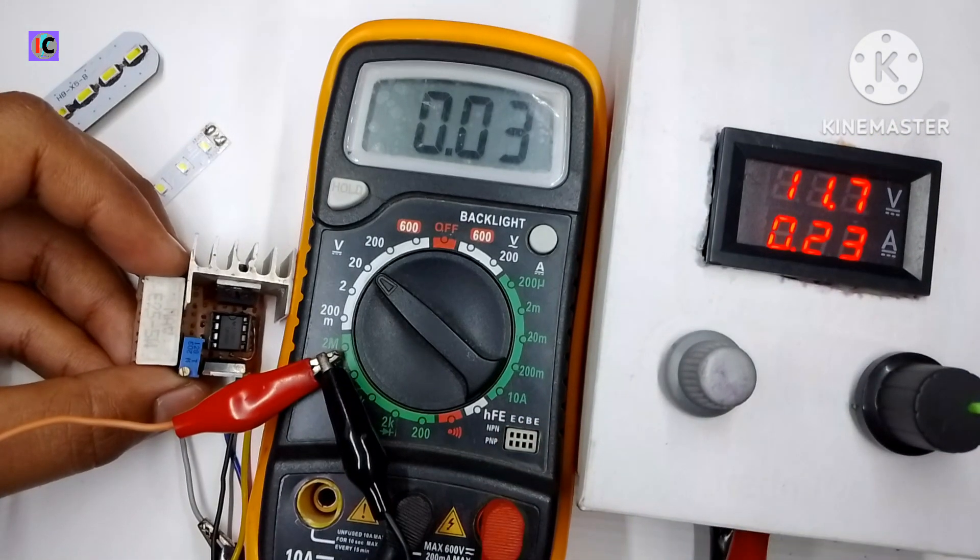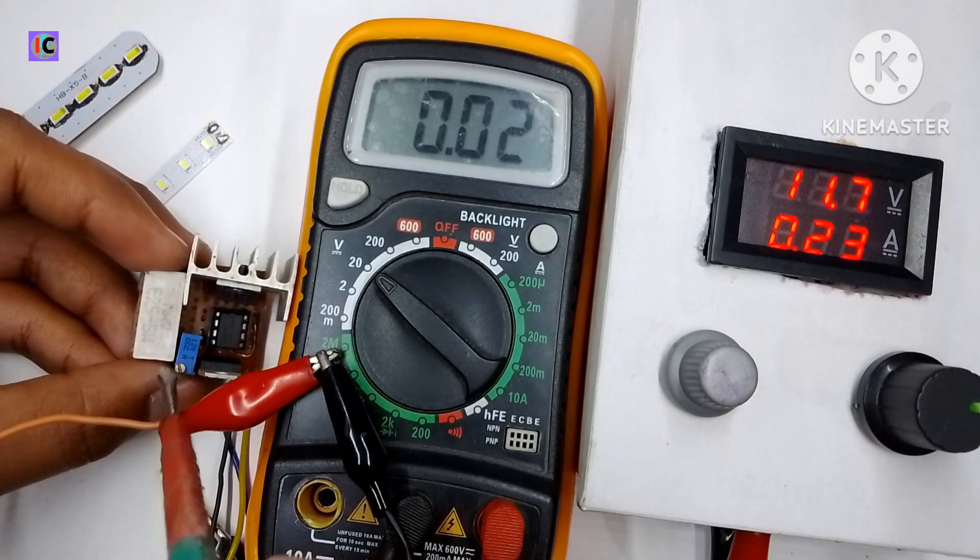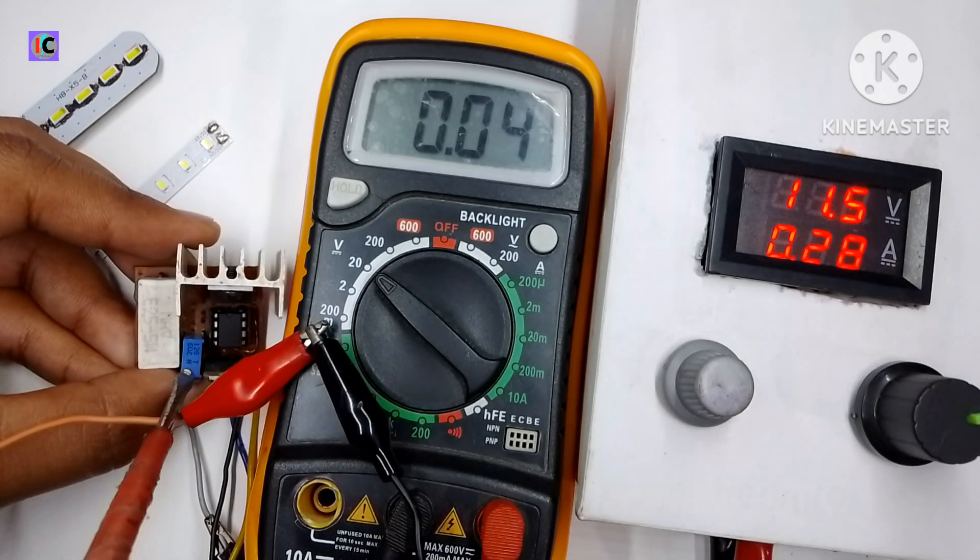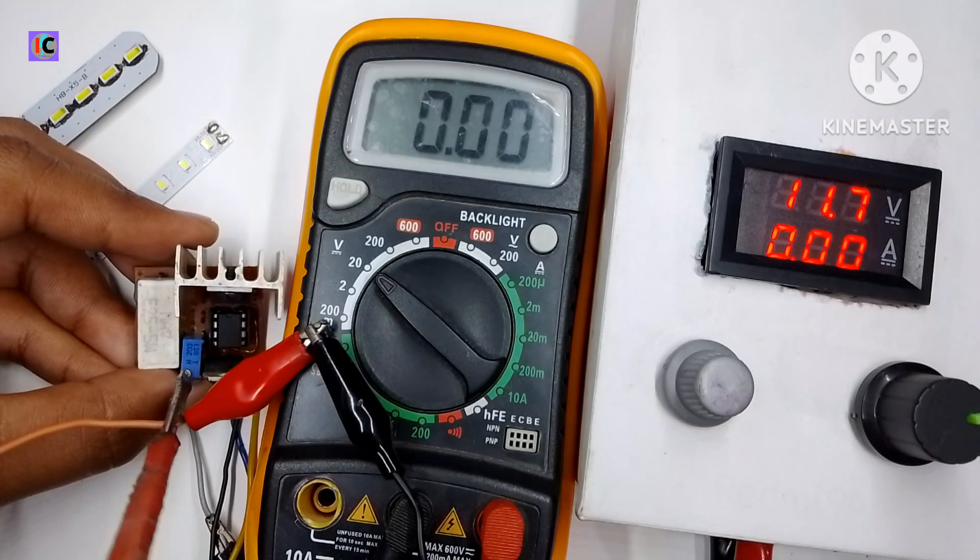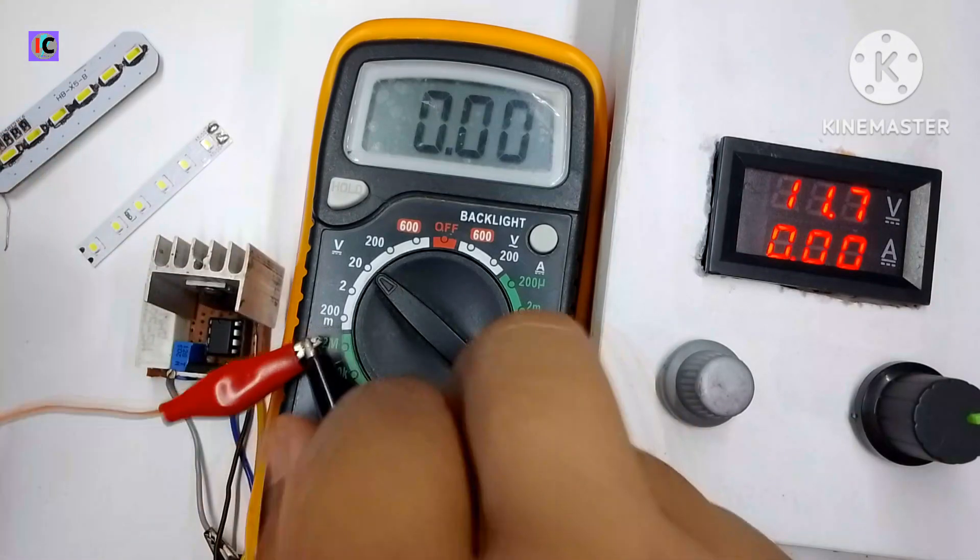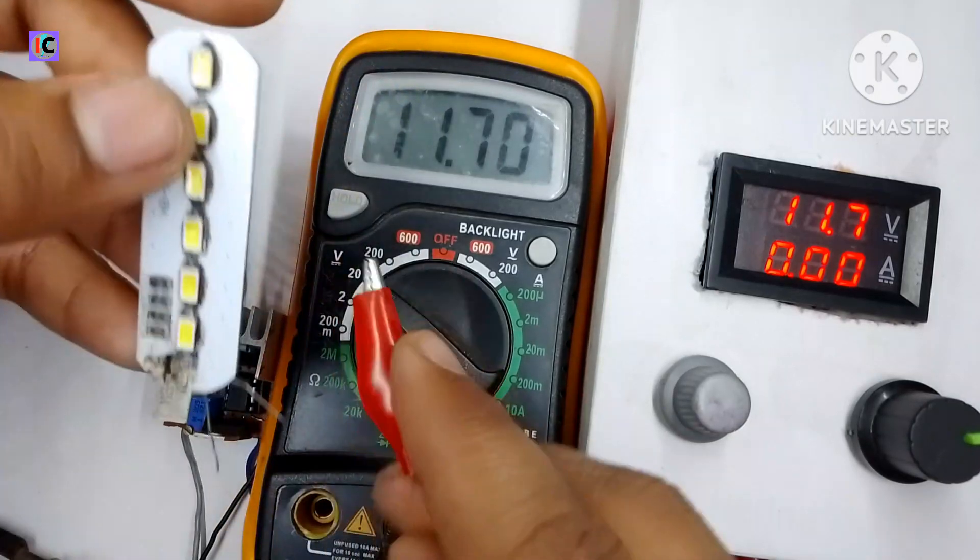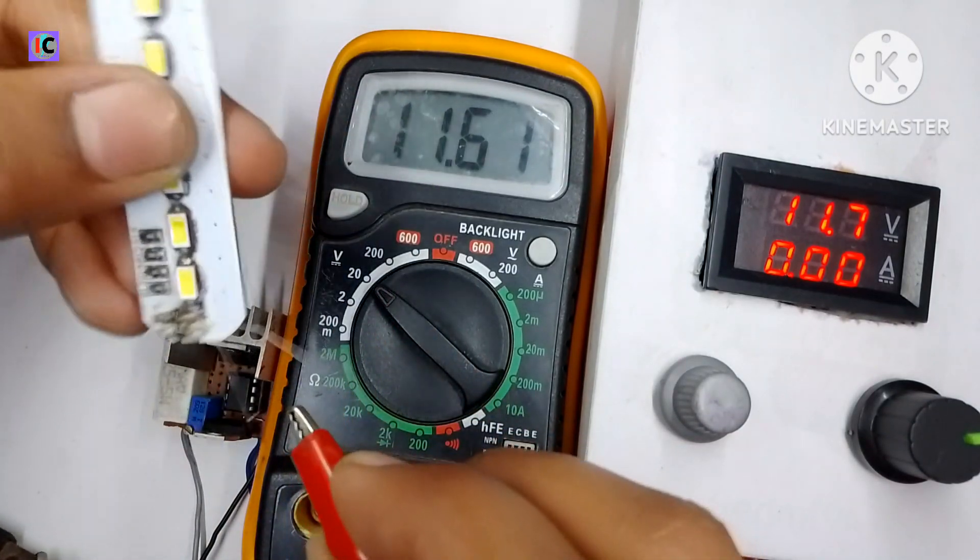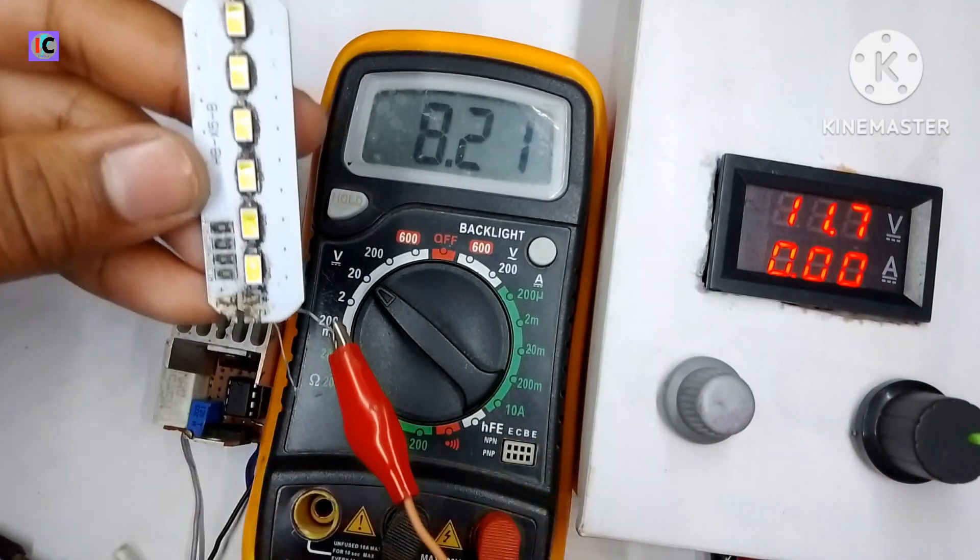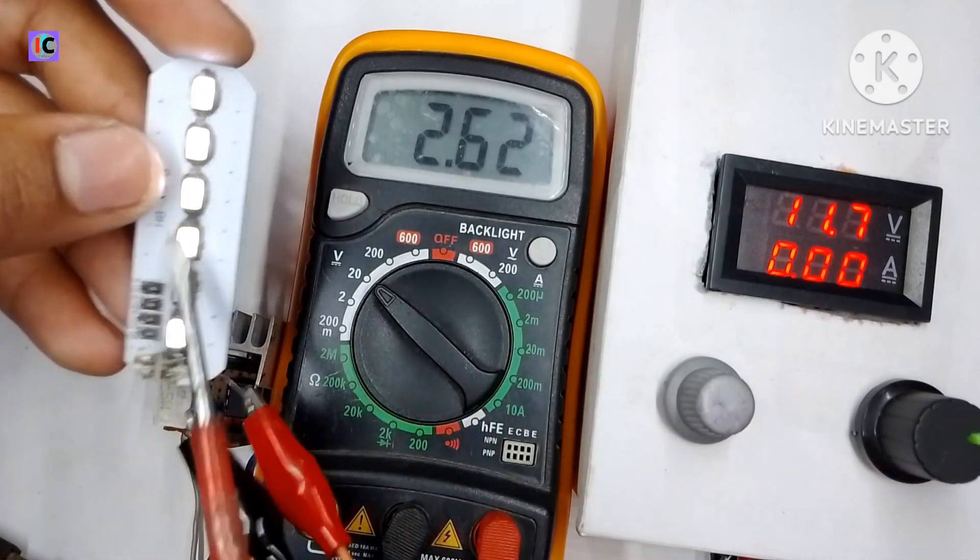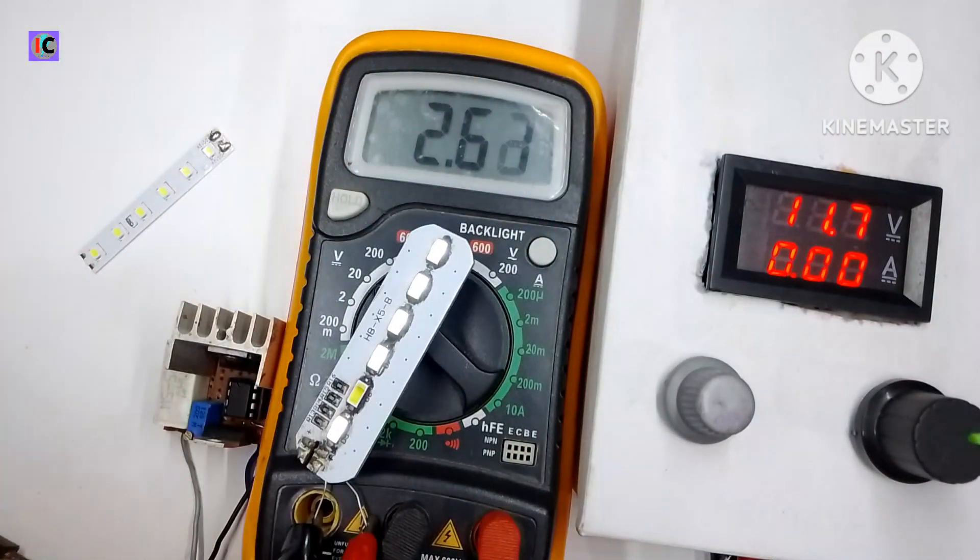I'm adjusting the output current by the potentiometer given on the circuit. You can see I can control the current so that you can drive any LED without damaging them. Here I've connected a 4 volt LED to my circuit and the voltage drops at 2.6 volts.